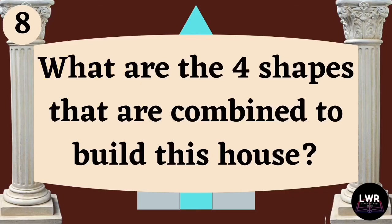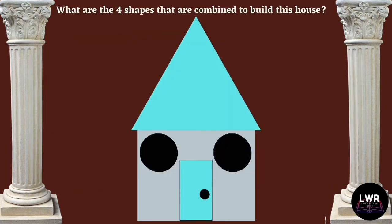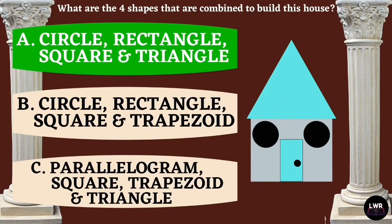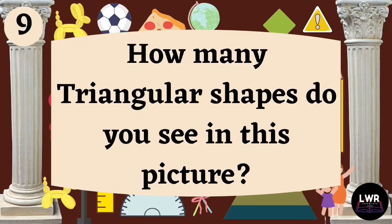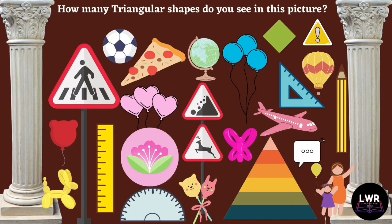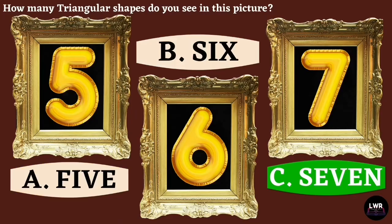Question number eight: what are the four shapes combined to build this house? The correct answer is letter A — circle, rectangle, square, and triangle. Question number nine: how many triangular shapes do you see in this picture? The correct answer is letter C, seven.